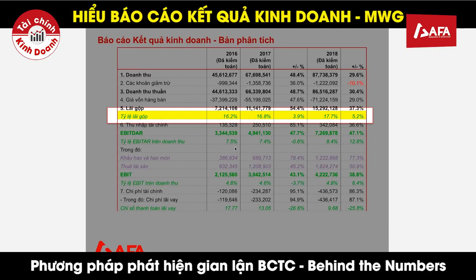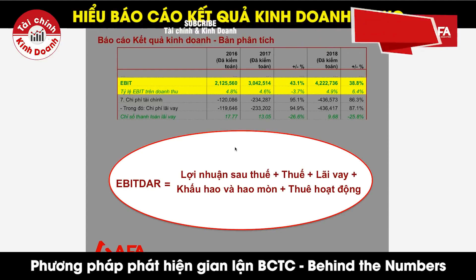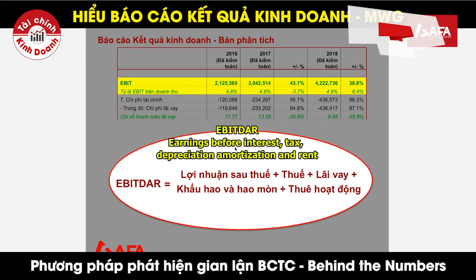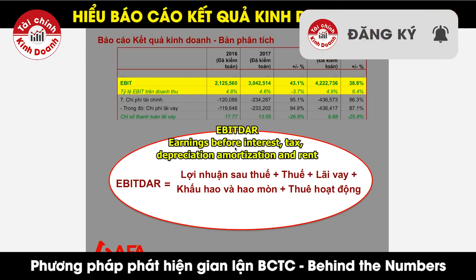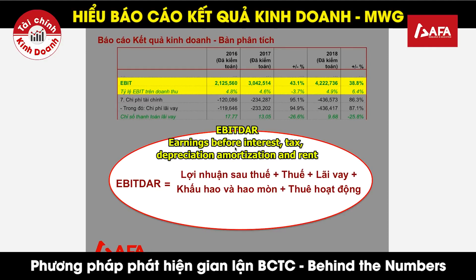Chỉ tiêu thứ hai là một chỉ tiêu đặc thù của ngành kinh doanh bán lẻ, đó là EBITDAR - EBITDA có thêm chữ R ở cuối. Thông thường đối với doanh nghiệp bình thường, chúng ta tính EBITDA không có chữ R, tức là lợi nhuận sau thuế cộng thuế cộng lãi vay và cộng khấu hao và hao mòn. EBITDA trong tiếng Anh có nghĩa là Earnings Before Interest, Tax, Depreciation and Amortization. Chữ R ở cuối có nghĩa là Rental - chi phí thuê hoạt động.